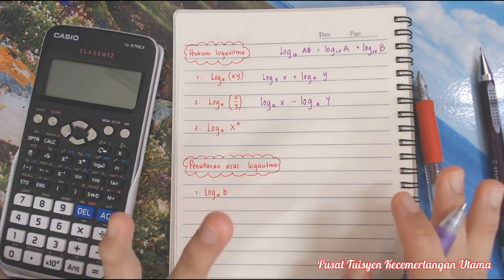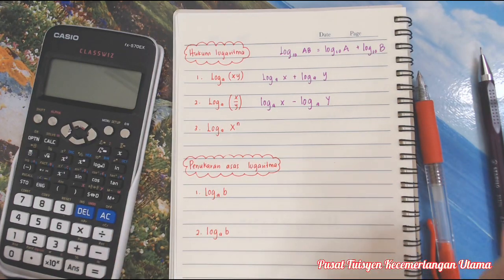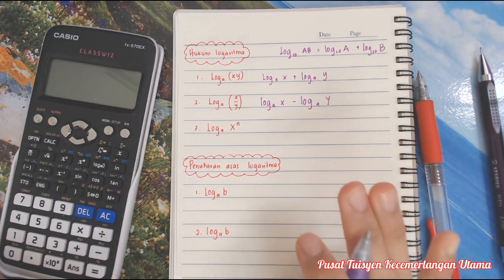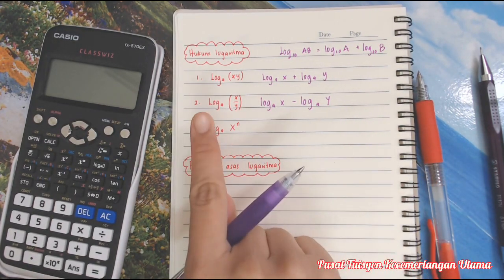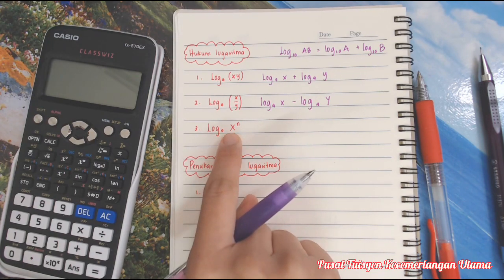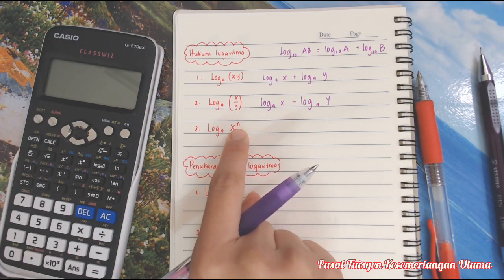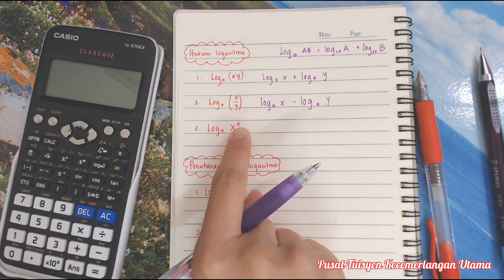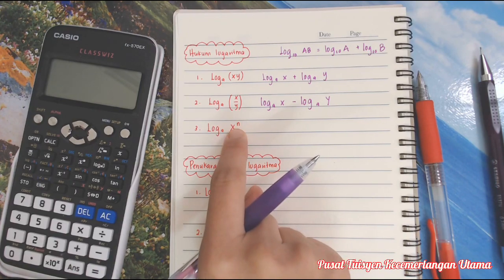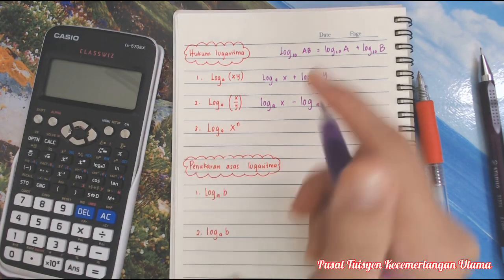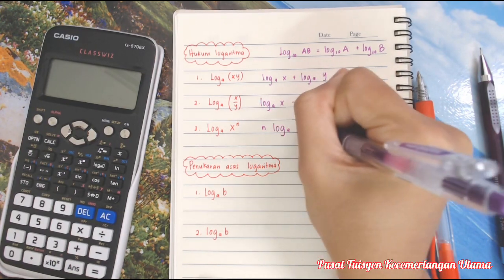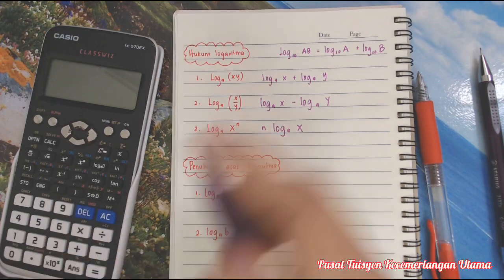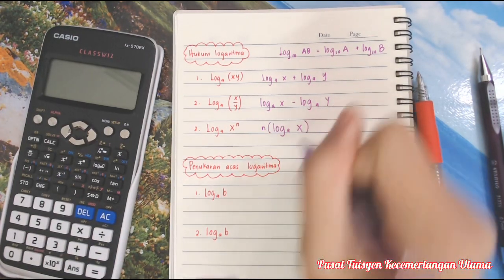Tu cikgu cakap index, awak akan bawa sampai ke SPM. Even awak belajar kat PT3, awak akan bawa sampai SPM. Sangat-sangat penting. Log a x kepada kuasa n. N ni adalah kuasa bagi x. Apa yang awak kena tahu adalah n ni kita kena pindahkan ke depan. Dia jadi n log a x. Dia jadi darab lah terus macam ni.